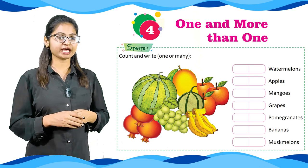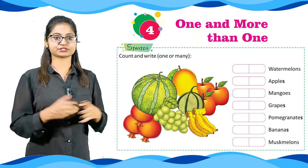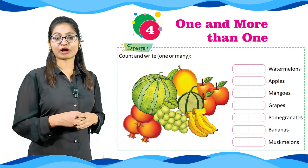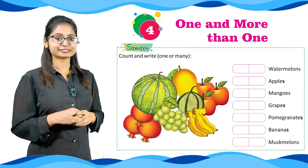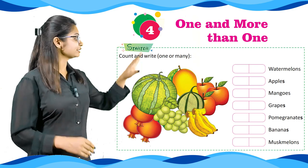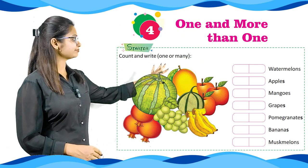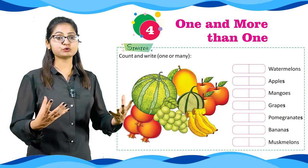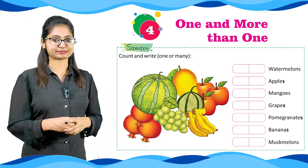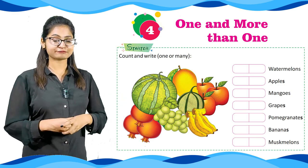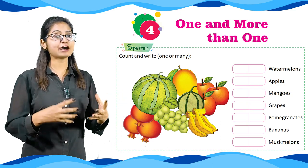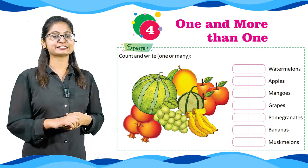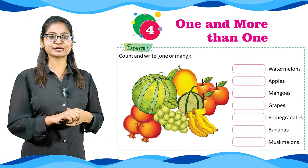We have given pictures — count and write one or many. So students, you can see here pictures in which there are fruits of different types, and we have to write how many are they — one or many. So let's look.